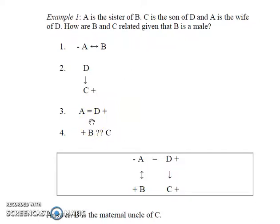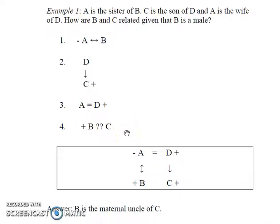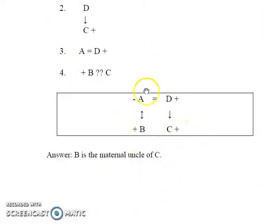Now in the question, it's given to us that B is a male. Our job is to group all these information together and find out how B and C are related to each other. So, on joining all the pieces together, we get this diagram which is a family relationship tree.